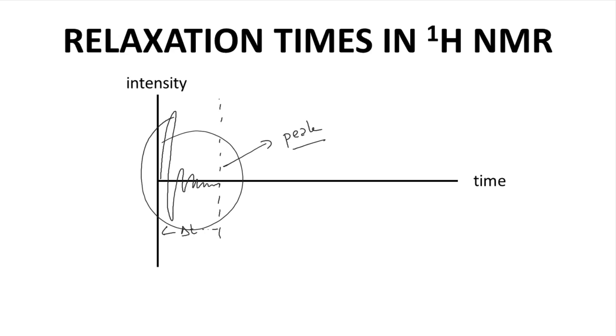In proton NMR spectra, each nucleus releases its energy quickly, in a short period of time, and the ringing ends quickly. Because all hydrogens behave fairly similarly, the amount of energy released for each nucleus is also very similar, and the NMR peaks can be integrated and compared to one another.